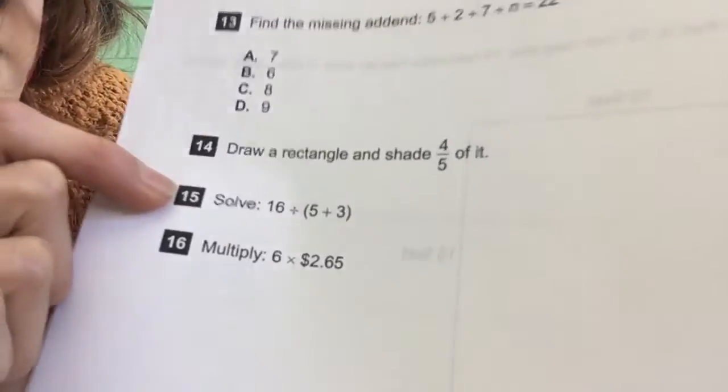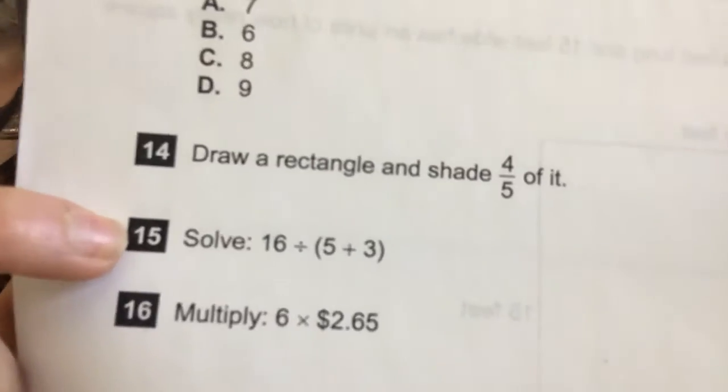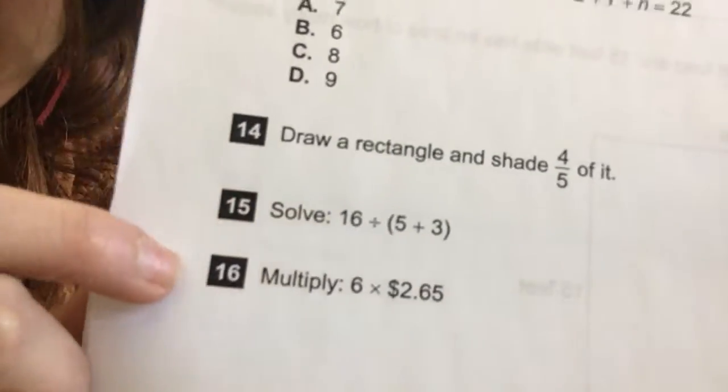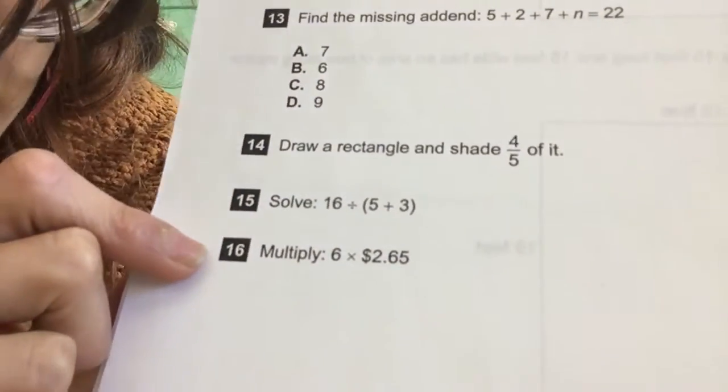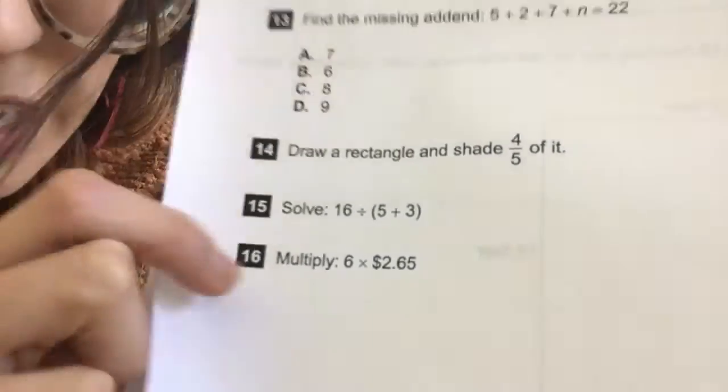Fifteen. Solve sixteen divided by parentheses five plus three. Don't forget to do what's in parentheses first. Number sixteen. Multiply six times two dollars and sixty-five cents. Okay, you need to show your work. Make sure you show your work.